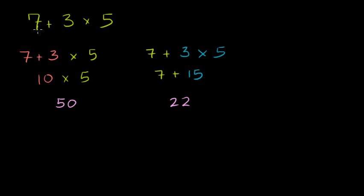So notice we interpreted the same statement in two different ways — one left to right doing addition then multiplication, the other doing multiplication first then addition — and we get two different answers. That's just not acceptable in mathematics. If this was part of some effort to send something to the moon and two people or two computers interpreted it differently, the satellite might go to Mars. That's why we have to have an agreed upon order of operations.